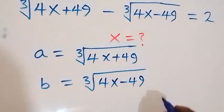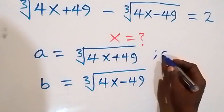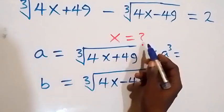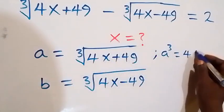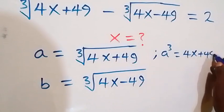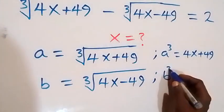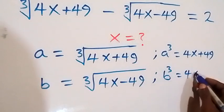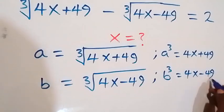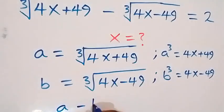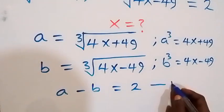This implies that A cubed equals — taking the cube on this side, cube cancels cube root — and we have A cubed equals 4x plus 49. Then also B cubed equals 4x minus 49. From this, we can rewrite the equation given, and that becomes A minus B equals 2. We can label this as equation 1.